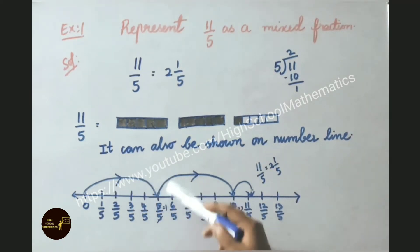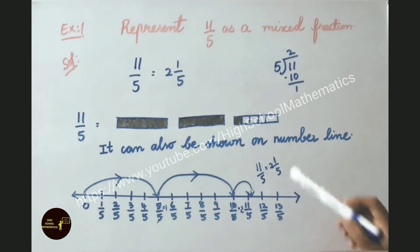So 1, 2. Here 2 complete parts and next 1 by 5. So 11 by 5 we represented here: 1 part. So 11 by 5 means 2 and 1 by 5. So 11 by 5 we have represented.